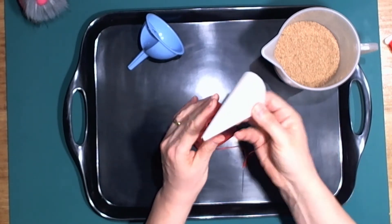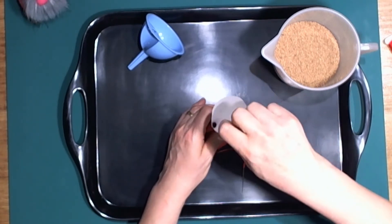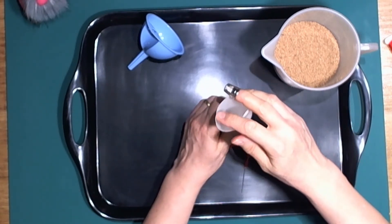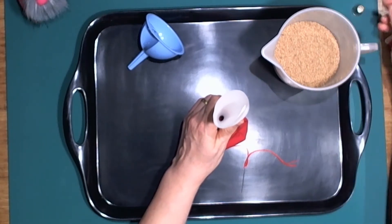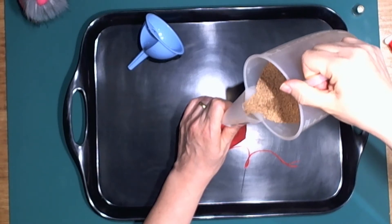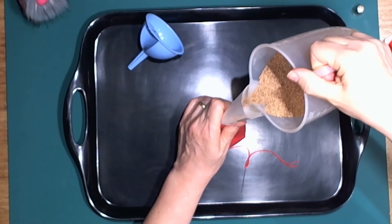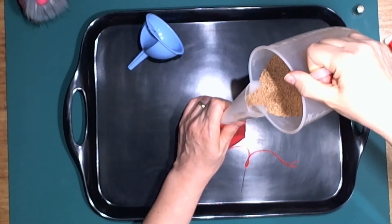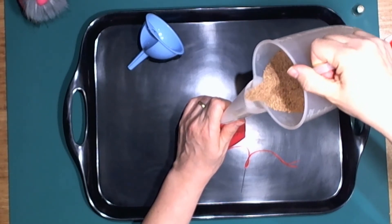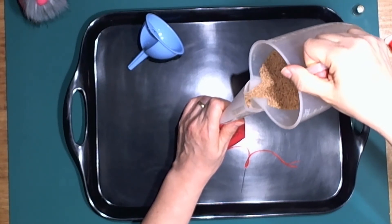If you have a small funnel you can use it here, otherwise there's a PDF template for a paper funnel in the links below. Place your funnel into the neck of the gnome and hold this gently with one hand. Slowly pour the walnut shells into the gnome body, tamping it down every so often to allow the shells to settle. You may have to do this quite a lot as it can take a while.